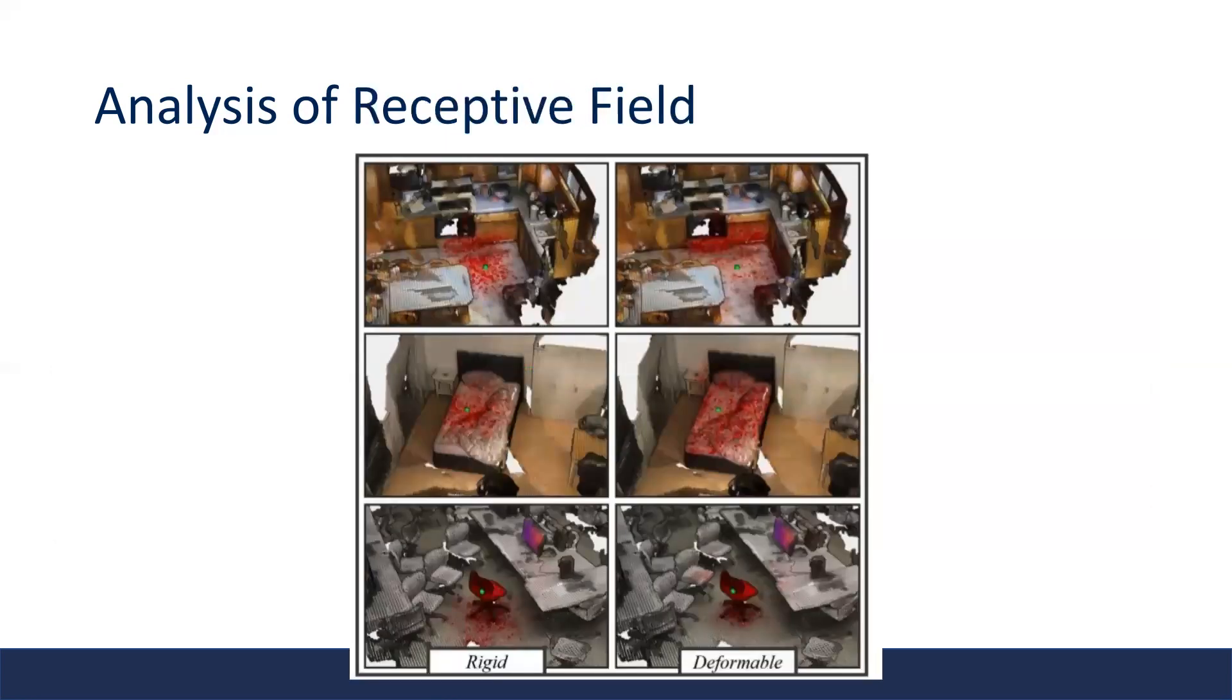Here we visualize the kernel shape for the rigid and deformable version. We see that the deformable version can better adapt the kernel points to different input data, whereas the rigid version tends to give a uniform shape in 3D space.